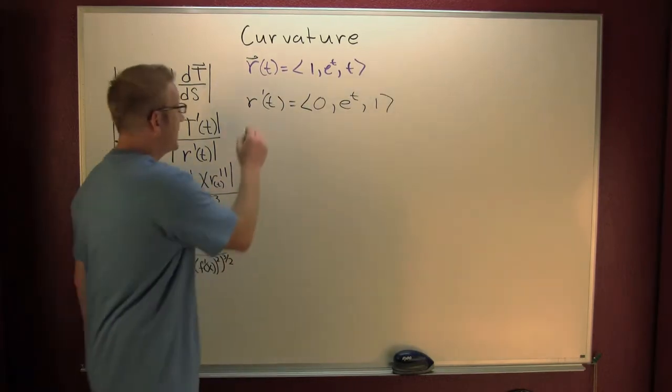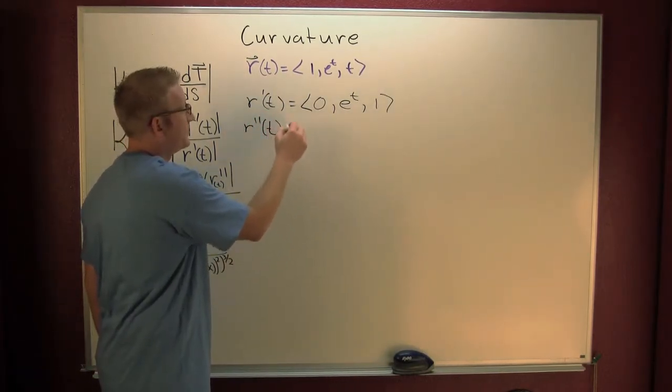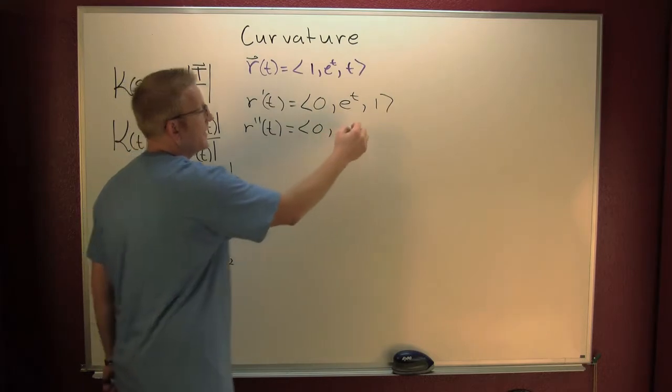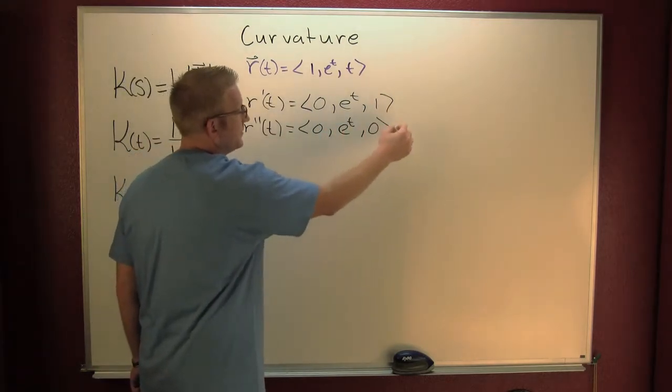I'm going to keep on keeping on. My second derivative, our prime of t, prime prime of t. That's zero, e to the t and zero. Sure.